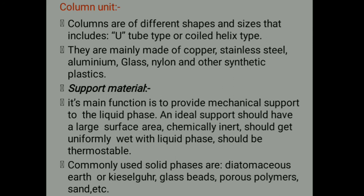Next we have column units. Columns are of different shapes and sizes, including U-type or coiled helix type. They are mainly made up of copper, stainless steel, aluminum, glass, nylon, or other synthetic plastics. Support materials: their main function is to provide mechanical support to the liquid phase. An ideal support should have a large surface area, be chemically inert, should get uniformly wet with the liquid phase, and should be thermostable. Commonly used solid support materials include glass beads, porous polymers, and sand.